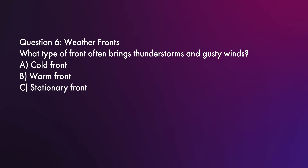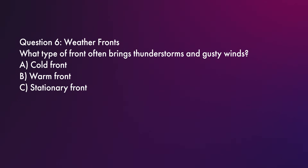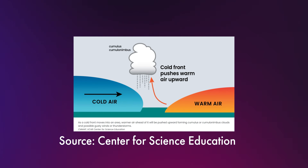Question number six: What type of front often brings thunderstorms and gusty winds? Is it A, a cold front; B, a warm front; or C, a stationary front? The correct answer is A, a cold front. Cold fronts force warm, moist air upward quickly, creating unstable conditions that can lead to thunderstorms. Warm fronts typically bring steady rain or drizzle. Stationary fronts can lead to prolonged rain, but they don't have the turbulence of cold fronts.